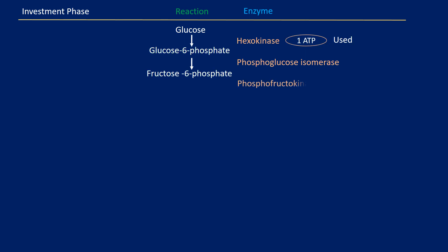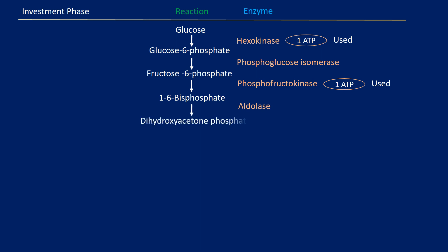Then, the second phosphate is added by the enzyme phosphofructokinase, which utilizes the second ATP molecule and phosphorylates fructose-6-phosphate into fructose-1,6-bisphosphate. This step is the rate-limiting step and is also irreversible. During the following step, the enzyme aldolase converts fructose-1,6-bisphosphate into dihydroxyacetone phosphate, which is then converted into glyceraldehyde-3-phosphate by the enzyme triose phosphate isomerase. This step completes the investment phase.